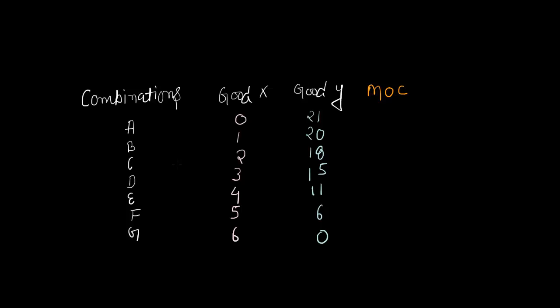Here we have certain combinations A, B, C, D, and two goods: Good X and Good Y. Notice among Good X and Good Y which good is gaining and which is being sacrificed. If you look at Good Y, you will see it is declining throughout — therefore Good Y is the good which is being sacrificed.